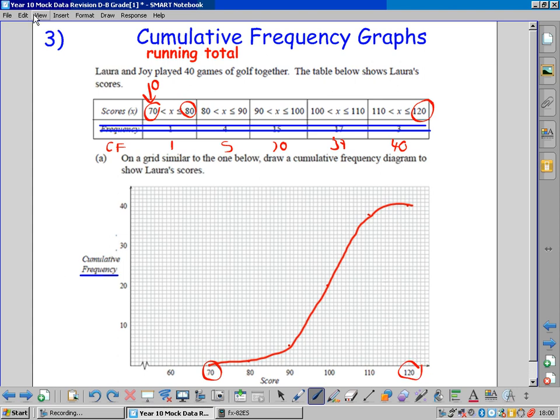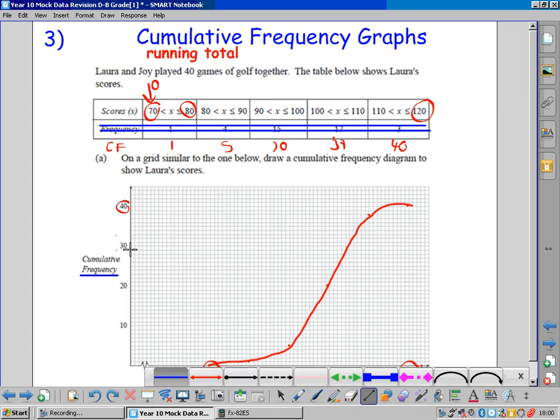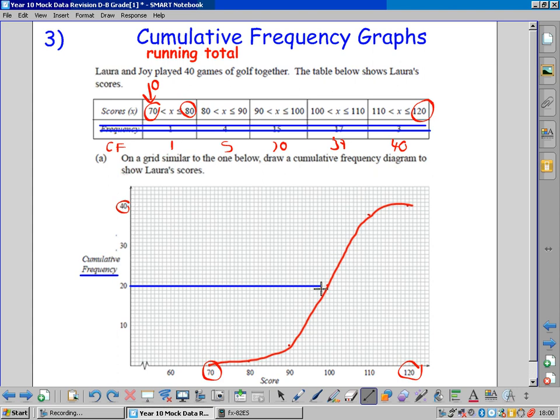It needs the highest possible score. The highest possible score is 120. It needs the middle person. And because it's an estimate anyway, we don't need to add one. We just half the highest, we half the number of items in the thing, 40. Half it is 20. We're halfway down. We go across to our graph. And we go down. And that looks about 100.